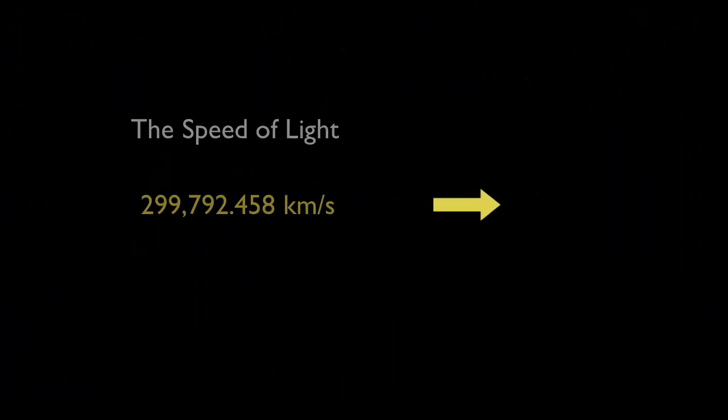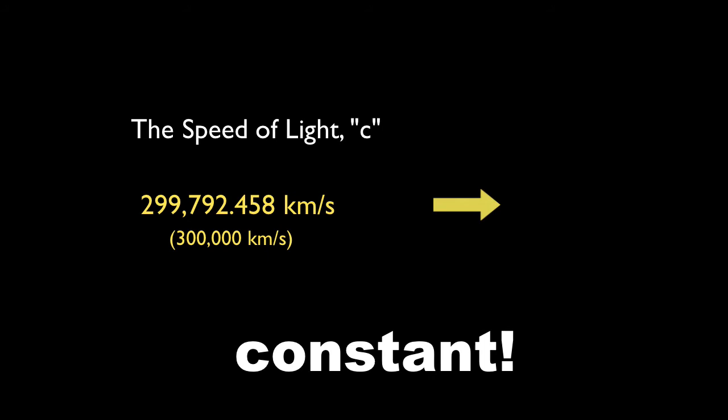In our common units, we find it to be 299,792.458 kilometers per second, which would conveniently round off to 300,000 kilometers per second. And even more conveniently, we represent it using the lowercase letter C, where C stands for constant.